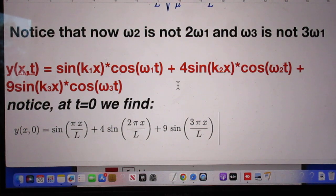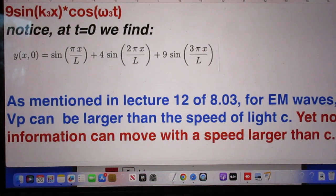Substitute in this equation t equals 0. Then the cosine is 1, this cosine is 1, and this cosine is 1. And so you find indeed that y, the function of x for t is 0, is this function.